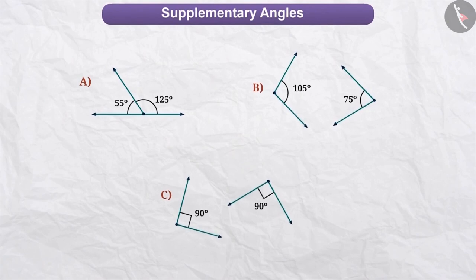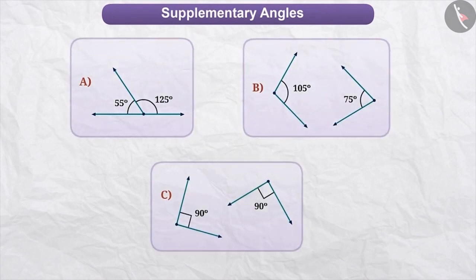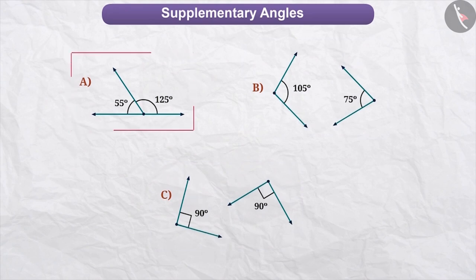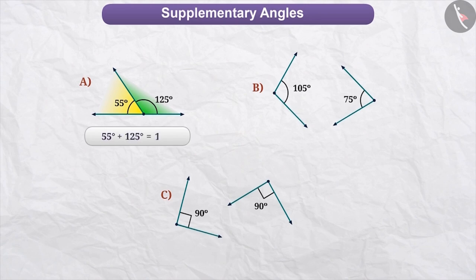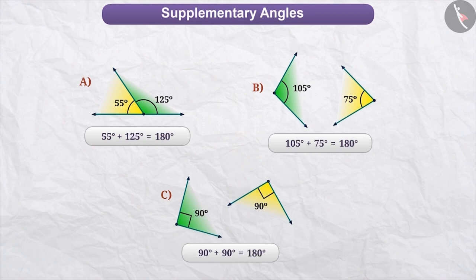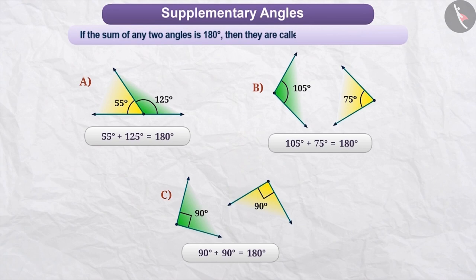Here, some figures are provided. There is a special relation between these three figures. Can you tell what that relation is? Pause the video and try. There are two angles in each figure. In figure A, the sum of both angles is 55 degrees plus 125 degrees, equal to 180 degrees. In figure B, the sum is 105 degrees plus 75 degrees, equal to 180 degrees. In figure C, the sum is 90 degrees plus 90 degrees, equal to 180 degrees. If the sum of any two angles is 180 degrees, then they are called supplementary angles.